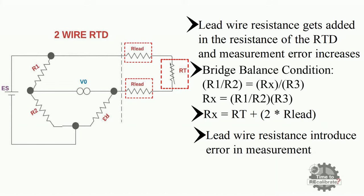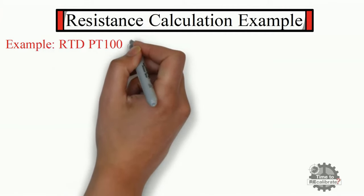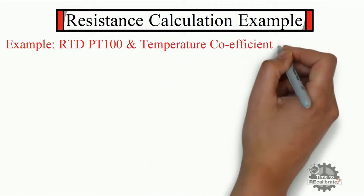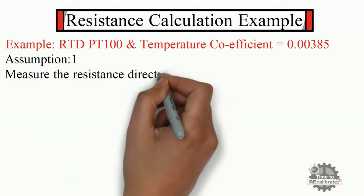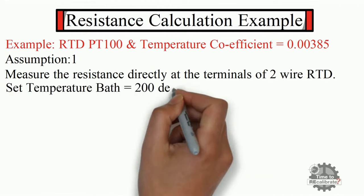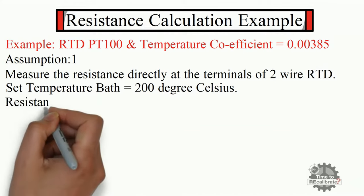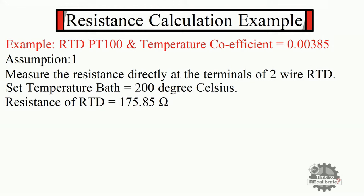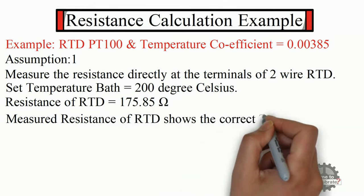Let's understand this with two examples. We have taken RTD PT100, and the temperature coefficient of this RTD is 0.00385. Assume we are measuring resistance directly at the terminals of the 2-wire RTD — in other words, without any lead wires. Put the RTD in a temperature bath and set the temperature to 200 degrees Celsius. Measuring the resistance at its terminals, you should get 175.85 ohms, which is the correct measurement — the measured resistance shows the correct temperature reading.